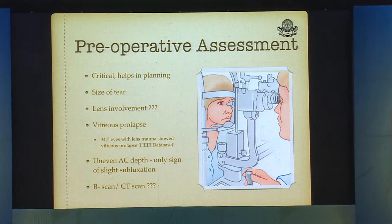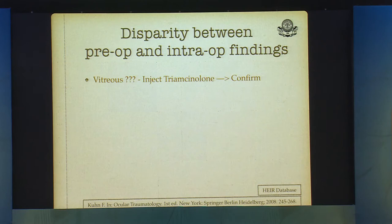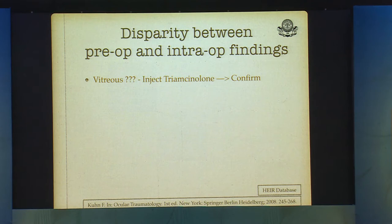There's always a disparity between the preoperative and intraoperative findings. So when you're going in, if you suspect vitreous, always inject triamcinolone and confirm. The first step every time in any such cases — subluxated lenses, trauma — is to do a vitrectomy first and then proceed to handling the lens, as per the HEIR database.